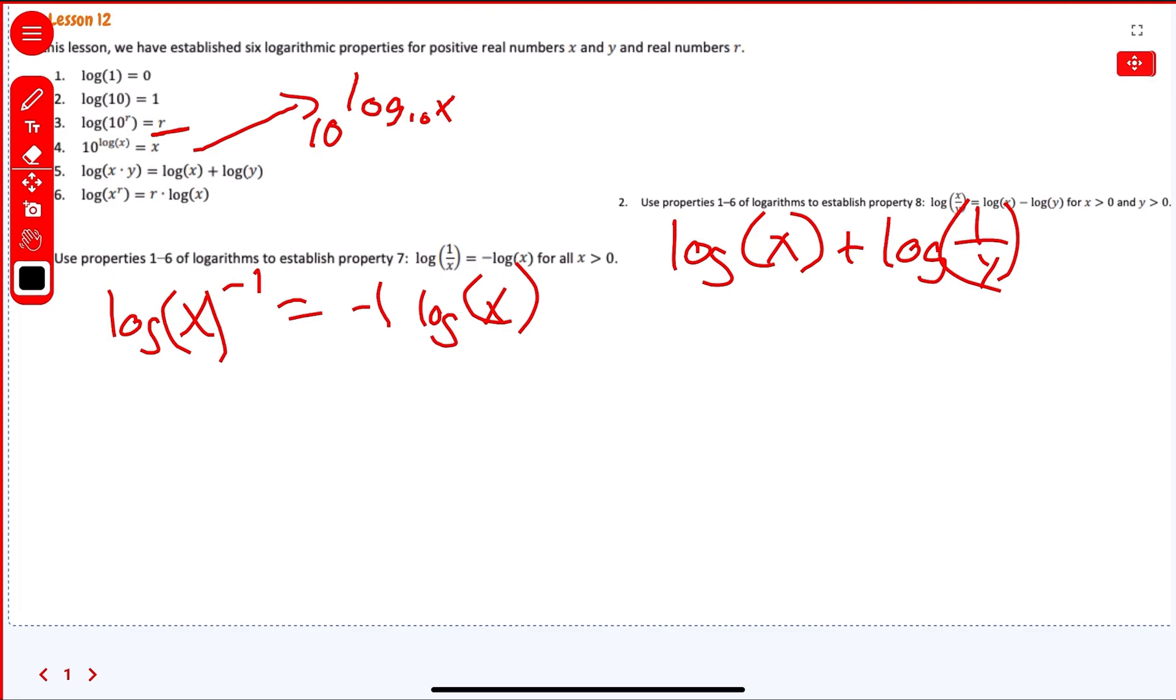Because that means we've multiplied it together. If we had that, we would multiply the x times 1 over y, which is equal to x over y. Correct? Anybody see that?